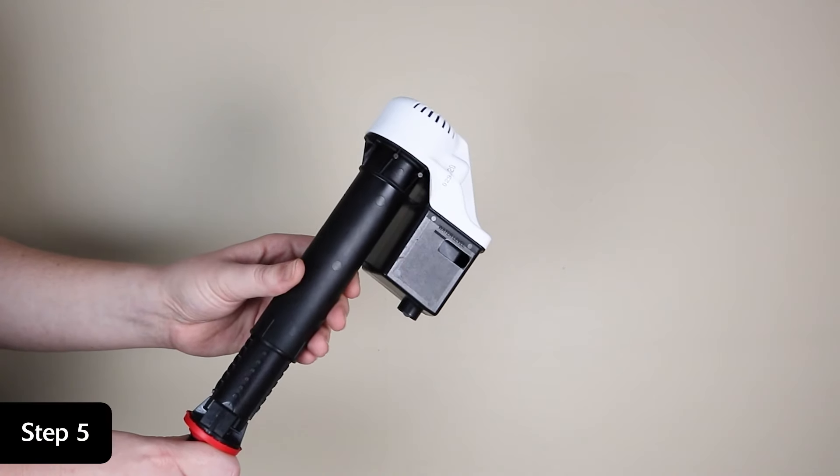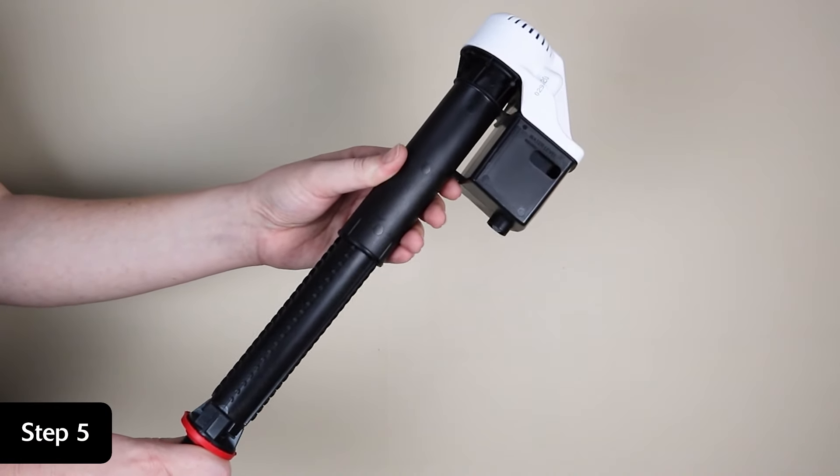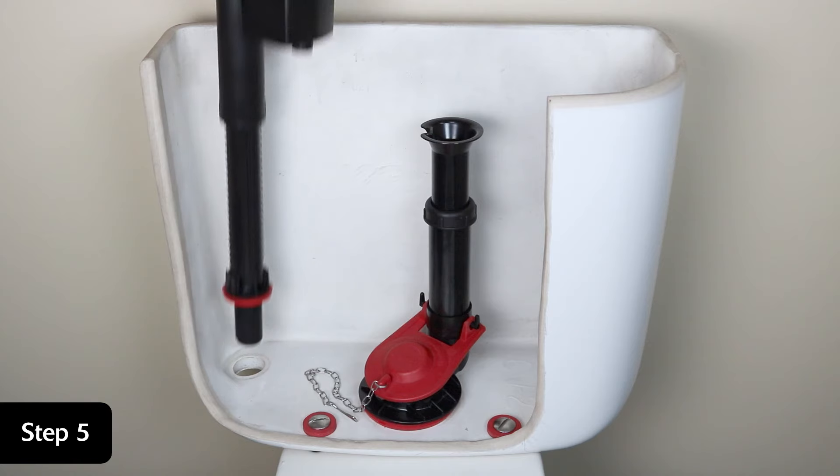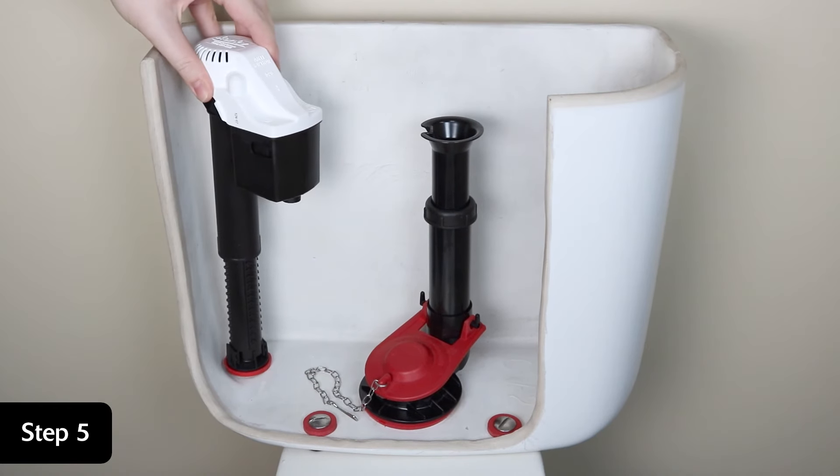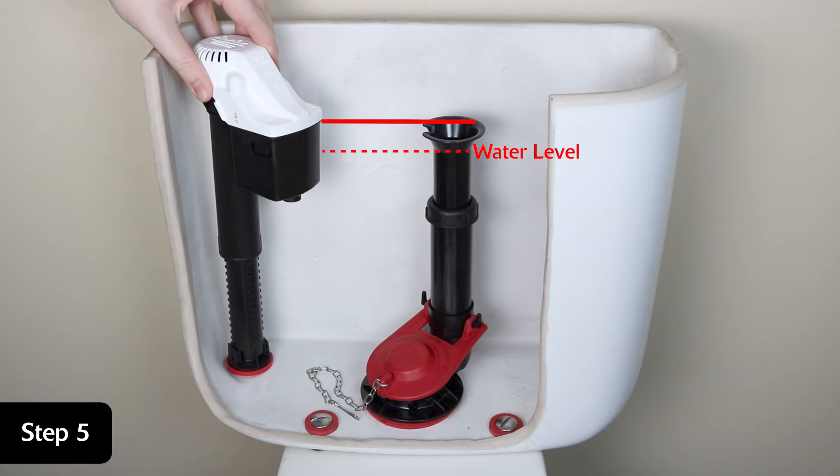Turn the top of your new fill valve counterclockwise and pull up to fully extend. Place the fill valve in the tank and press down until the corner of the white cover lines up with the top of the flush valve.